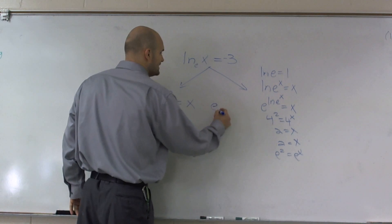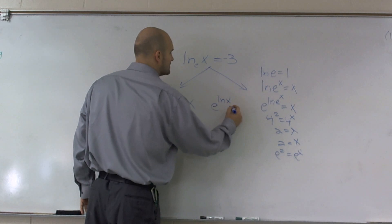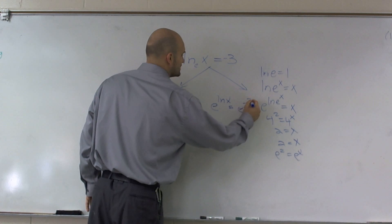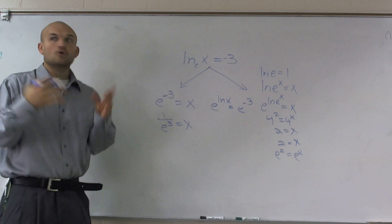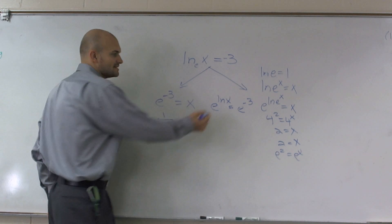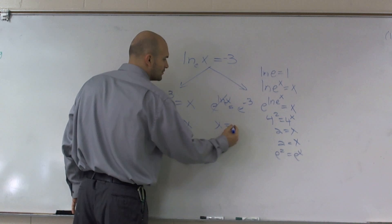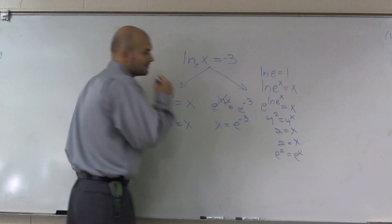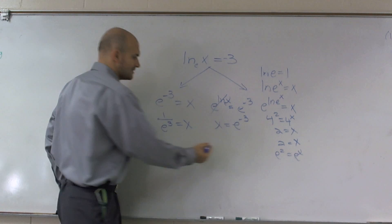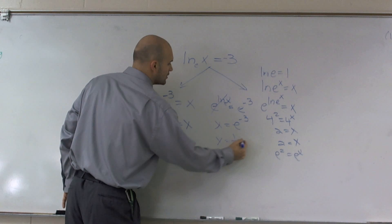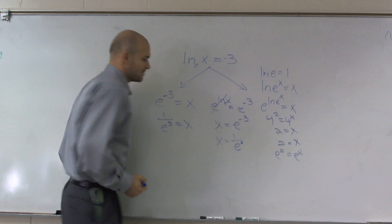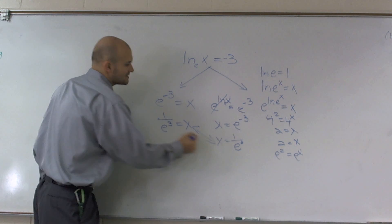I could say e to the ln of x equals e to the negative third power. The only reason why I would do that is because now I can cancel that out to leave me x equals e to the negative third. Then I can rewrite this as x equals 1 over e to the positive power, which gives you the exact same answer.